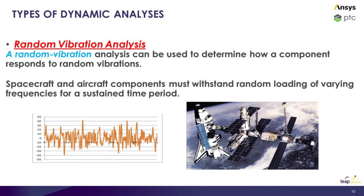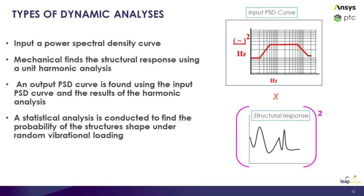The next method of analysis is a random vibration analysis. This predicts the response of the structure to random excitation statistically. It is used when we want to find the probability of the shape of the structure when a wide range of frequencies is applied to it — for example, a spacecraft. The input is a power spectral density (PSD) curve, which expresses the energy of a vibration event based on frequency. In the background, Mechanical runs a unit load harmonic analysis to find the structural response for a given frequency. This curve is squared and then multiplied with the input PSD curve to get an output PSD curve, from which the probability of the structure's shape under random loading is determined.